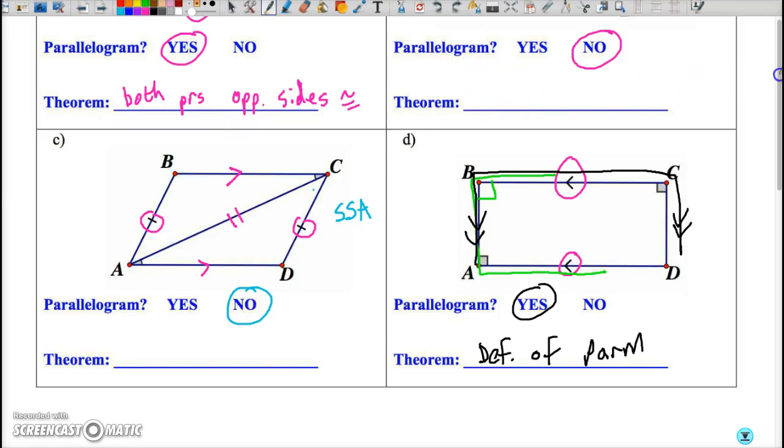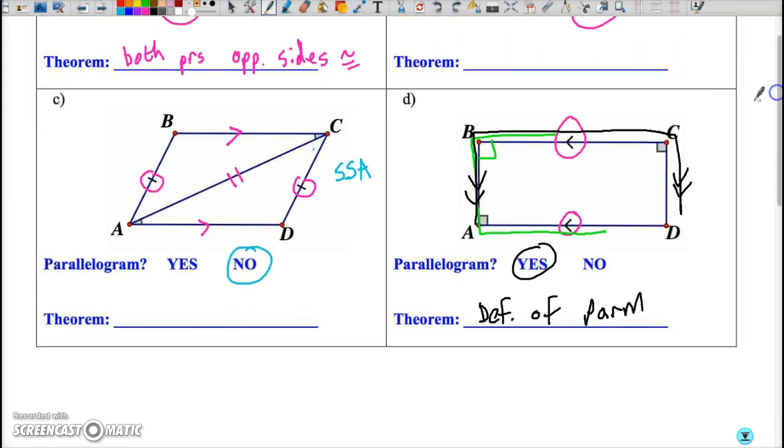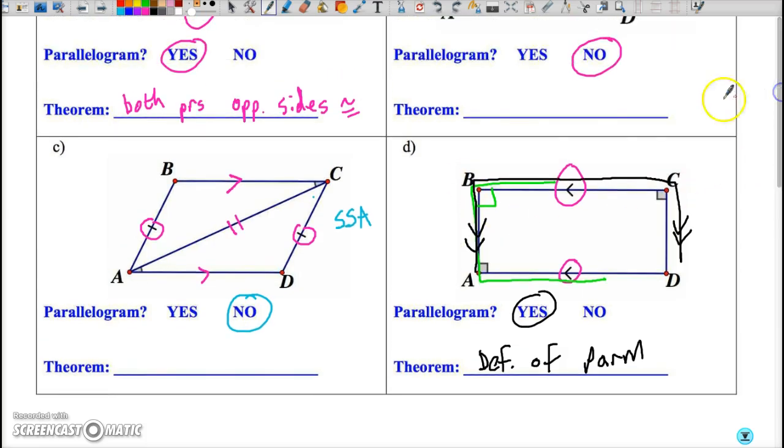Okay, so welcome back to part two of the parallelograms video. We just about finished the example over here where we showed that by virtue of definition of a parallelogram, ABCD was in fact a parallelogram because we were able to show with the consecutive interior angles and the given parallel sides that the other pair of sides was parallel.